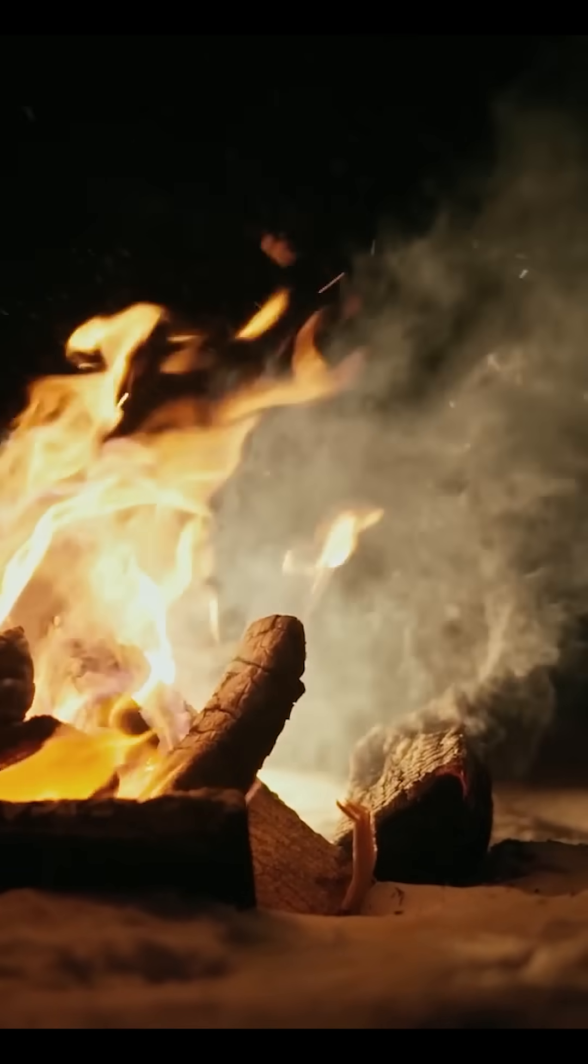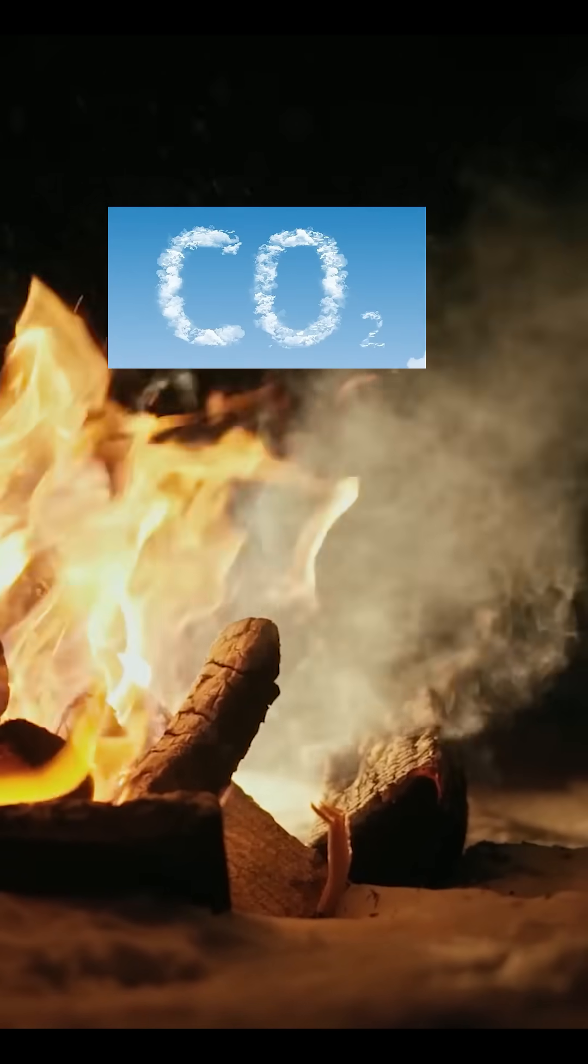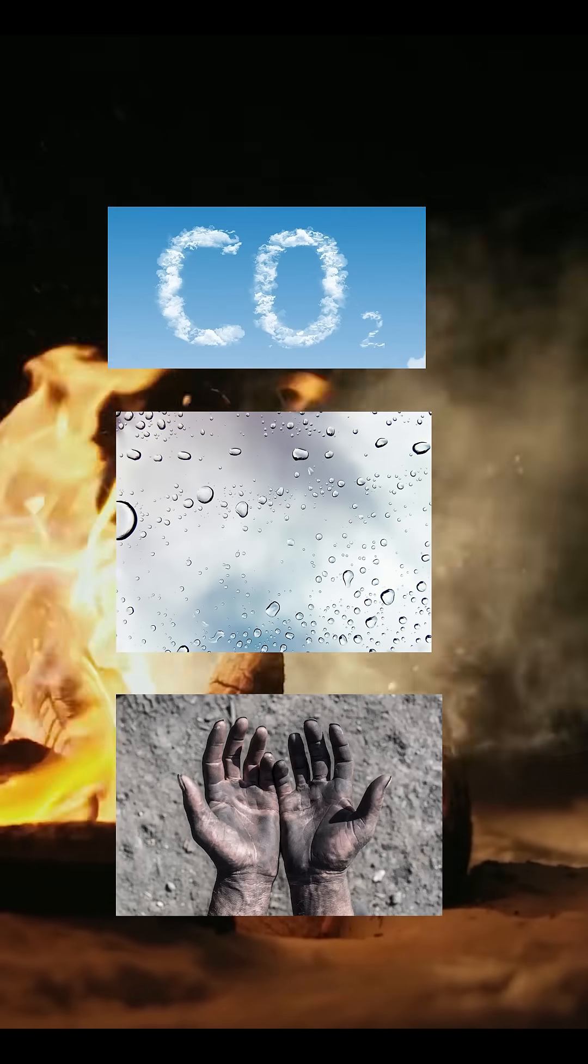The smoke from burning wood mainly contains carbon dioxide, water vapor, and a small amount of soot. Among these components only soot is flammable, but the concentration of soot in wood smoke is too low to sustain combustion.